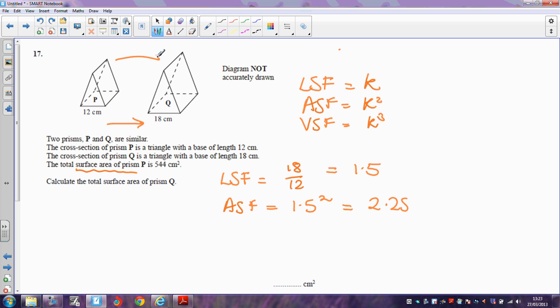Which means that any areas are going to be multiplied by 2.25. So they tell me that the total surface area of prism P, this one, is 544 centimeters squared. So if I want to find the surface area of this one, it's just going to be 544 multiplied by 2.25, and that comes out as 1,224 square centimeters.